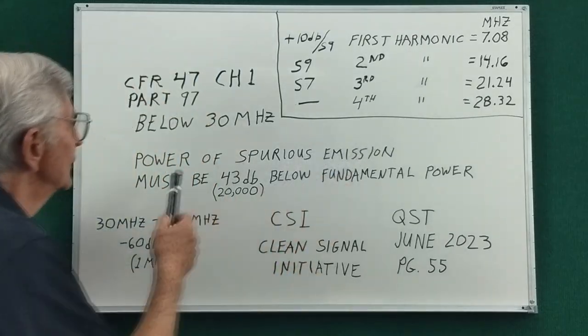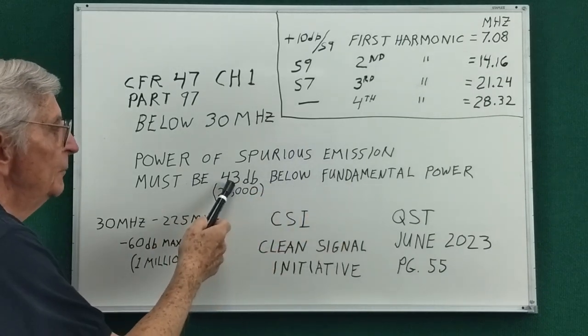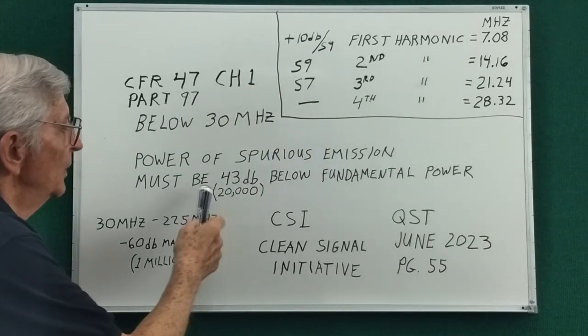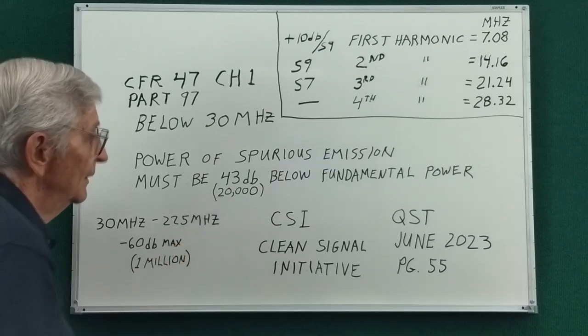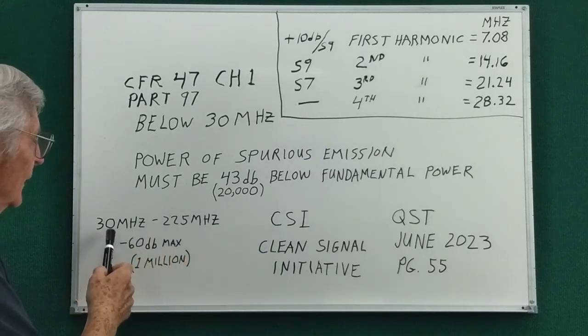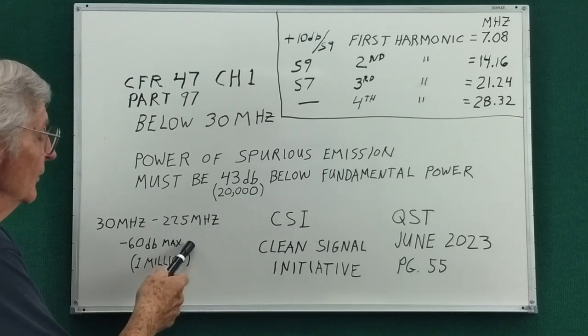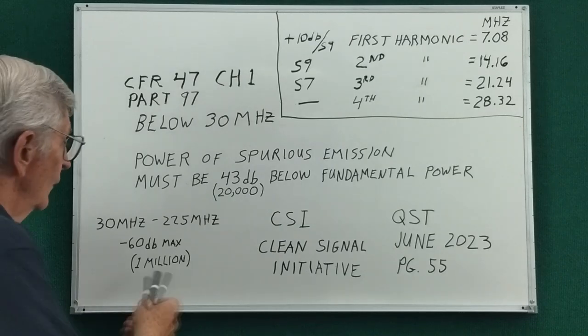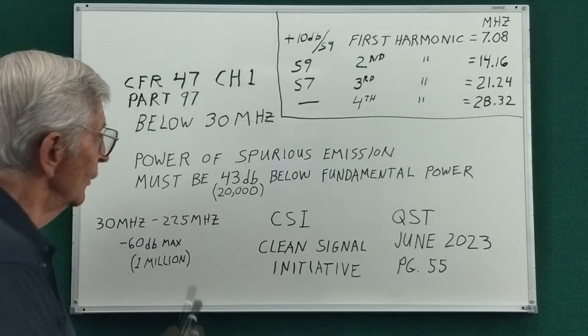By the way, the FCC rule is that you must be 43 dB down from the fundamental power. For those not familiar with dB, 43 dB is a factor of 20,000 times. I also found there's another rule that between 30 megahertz and 225 megahertz, you have to be 60 dB down from the fundamental. That turns out to be a ratio of a million to one.